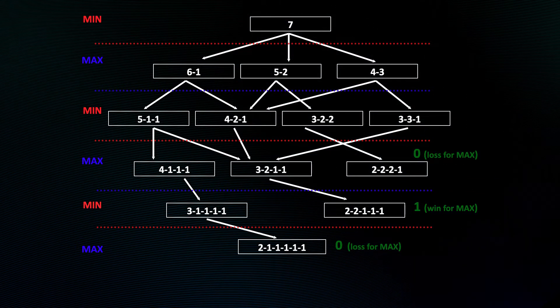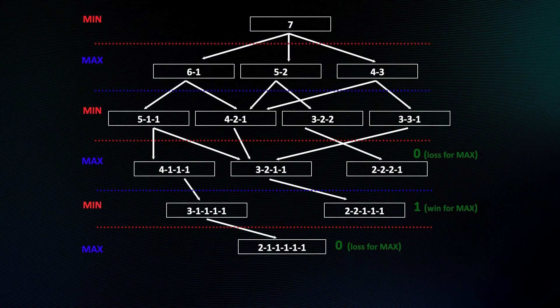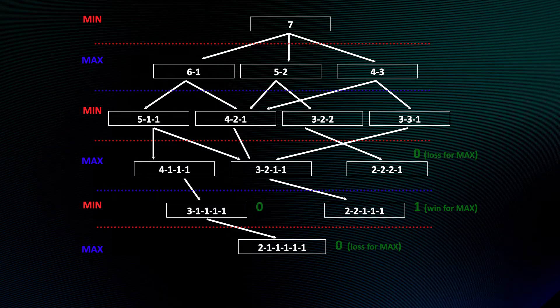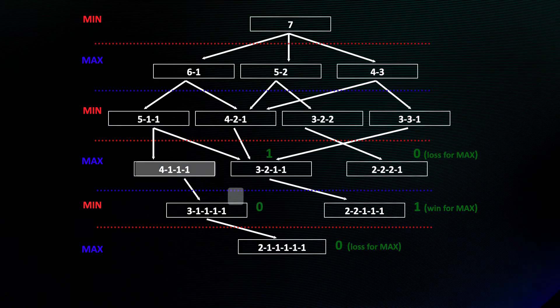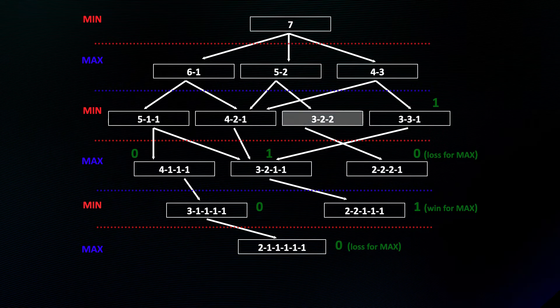All the intermediate positions then get their values by backing up the numbers from the leaves. Any position with just one move is simple.